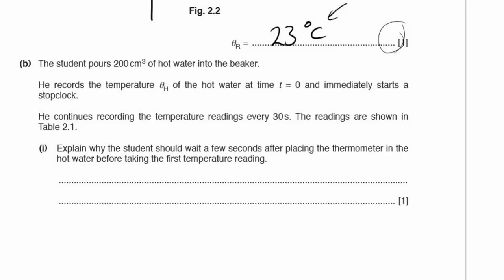Part B. The student pours 200 centimeters cubed of hot water into the beaker. He records the temperature theta h of the hot water at time t equals 0 and immediately starts the stop clock. He continues recording the temperature every 30 seconds. Part 1. Explain why the student should wait a few seconds after placing the thermometer in the hot water before taking the first temperature reading. If you've ever put a thermometer into hot water, you'll know it takes a little while to reach the maximum temperature, to get into thermal equilibrium.